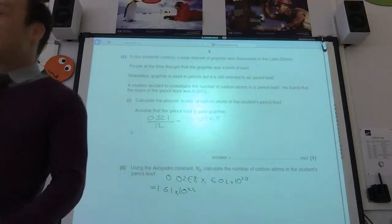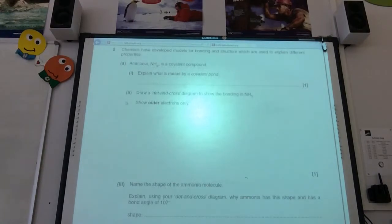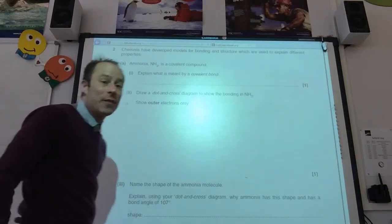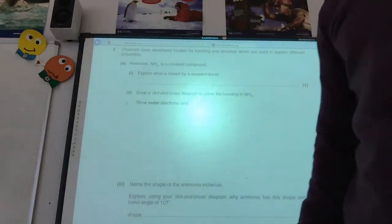The most common mistake there is people can't put Avogadro's constant in their calculator. Right, so question two. Chemists have developed models for bonding and structure. Ammonia is covalent. What is meant by covalent bond? It's a shared pair of electrons. That should be straight out. No problemos at all.